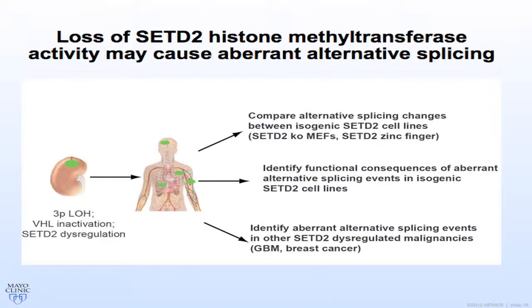For future experiments, we're comparing alternative splicing changes between isogenic SETD2 cell lines to see if findings are context dependent. We've generated SETD2 knockout mouse embryonic fibroblasts — VHL wild type — and some SETD2 zinc finger isogenic cell lines in the setting of VHL deficiency. The most challenging part will be identifying functional consequences of aberrant alternative splicing events in isogenic cell lines; based on prior breast and ovarian cancer splicing screens, about 10% of isoforms promote proliferation.